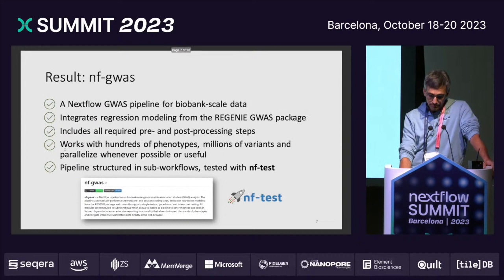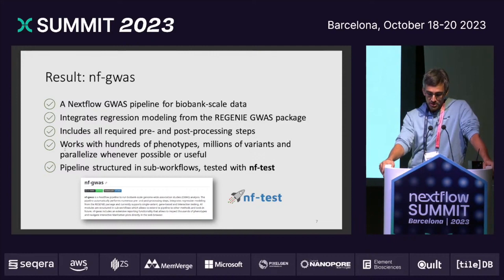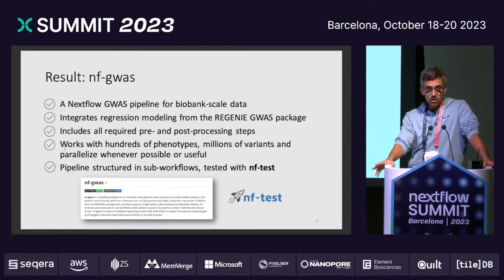For that, we developed a pipeline — a Nextflow pipeline — NF-GWAS, and we really tried to work with biobank-scale data. We decided to go as a first package with Regenie, which comes from Regeneron. It's a regression modeling GWAS package. Besides that, we are of course including all possible pre- and post-processing steps within the pipeline. At the end, it really works with hundreds of phenotypes, millions of variants, and we try to parallelize whenever possible or useful.